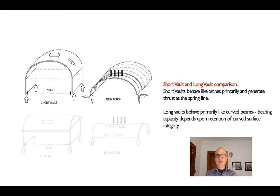Like many other long span structures we'll see, there's a big overall shape — the catenary short vault — and then secondary structure: the collar beams, the collar arches over the top, the tie rod across the center. These secondary structures make the primary structure hold its shape and prevent it from losing its good catenary or parabolic arch form.